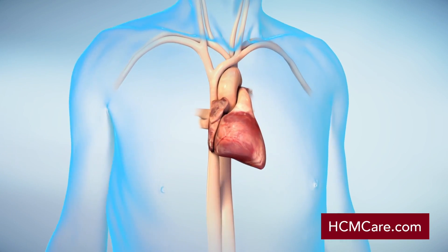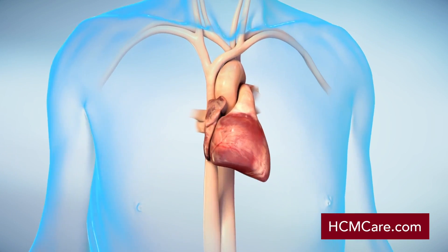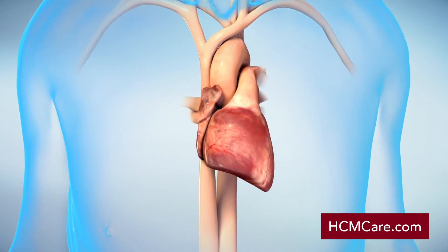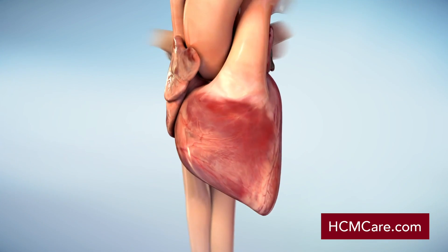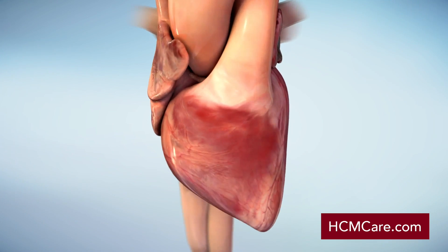Hypertrophic cardiomyopathy is a condition where the walls of your heart thicken, often caused by an abnormal gene.